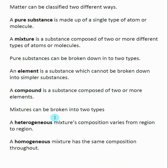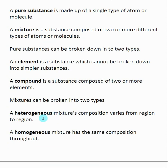Mixtures can also be broken up into two different types: heterogeneous, which means the mixture's composition varies from region to region — so one part may have one composition and a different part will have another — and homogeneous, which means the composition is the same throughout, so it doesn't matter which part of the mixture you're looking at.